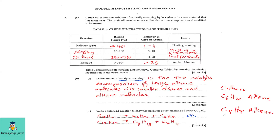It is also possible to get several alkenes from one cracking reaction. Starting with C₁₀H₂₂, you could get C₄H₁₀ as the alkane, then two alkenes: C₃H₆ and C₃H₆. Checking carbons on the right: 4+3+3 = 10, matching the left. Checking hydrogens: 10+6+6 = 22, also matching. So there are several valid ways to answer this question.